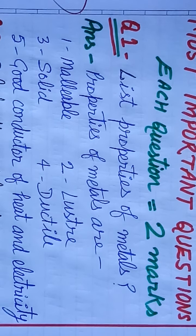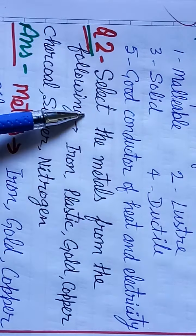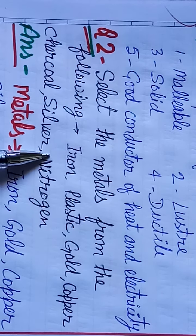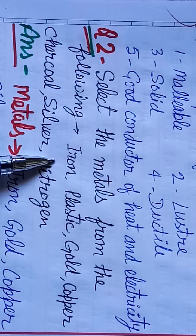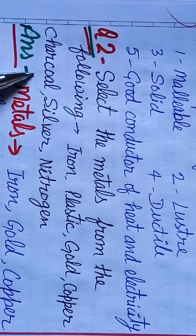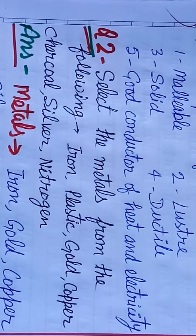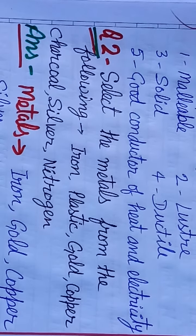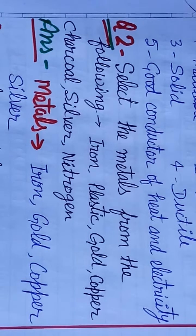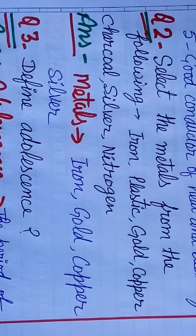The next question is to select the metals from the following. Iron, iron is metal, gold, copper and silver. So here are four metals: iron, gold, copper and silver.